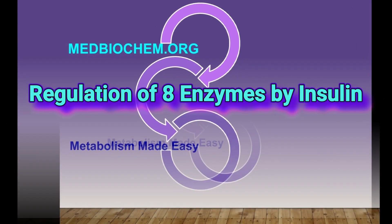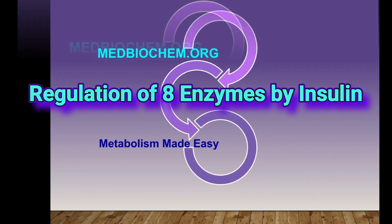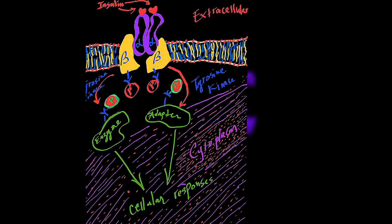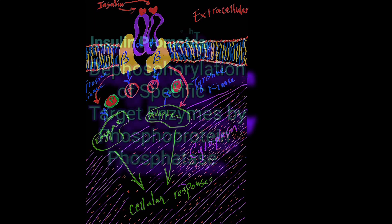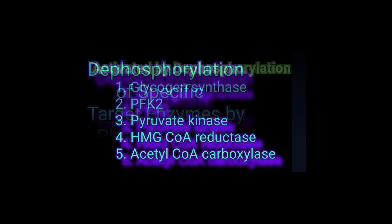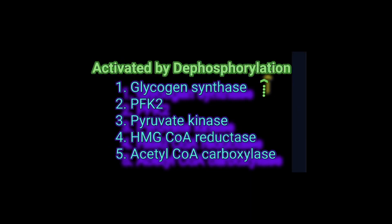Effects of insulin on eight key enzymes: through a cascade of post-receptor events, insulin activates a phosphoprotein phosphatase that dephosphorylates five key enzymes, activating them. Dephosphorylation of glycogen synthase activates the enzyme and increases glycogenesis. Dephosphorylation of PFK2 and pyruvate kinase will activate glycolysis.